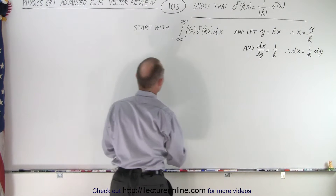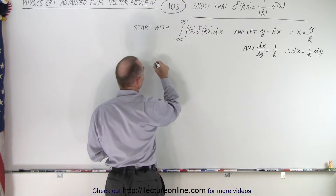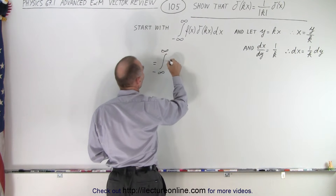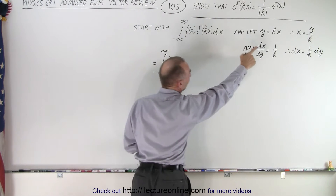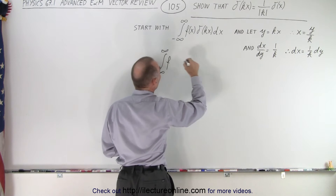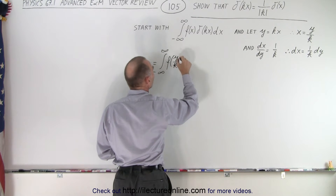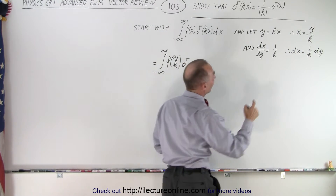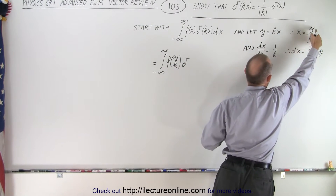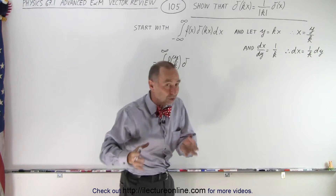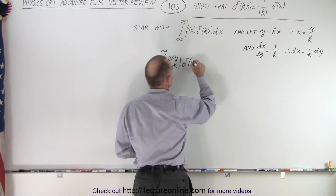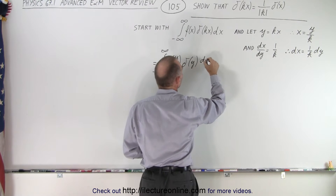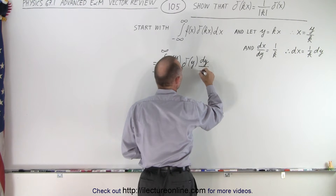Now we can make substitutions for dx and for x. This integral can now be written as the integral from minus infinity to infinity of f(y/k) times the delta function of kx — but since x equals y over k, k times y over k gives us simply y. So we have delta of y, and instead of dx we write dy over k.